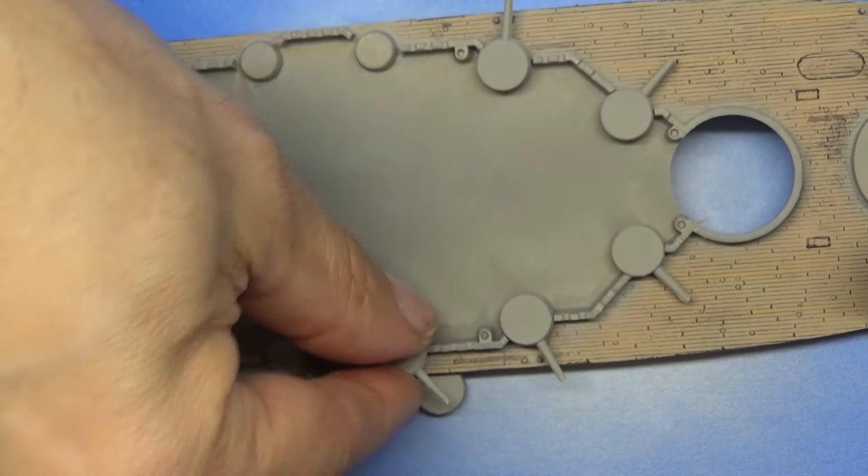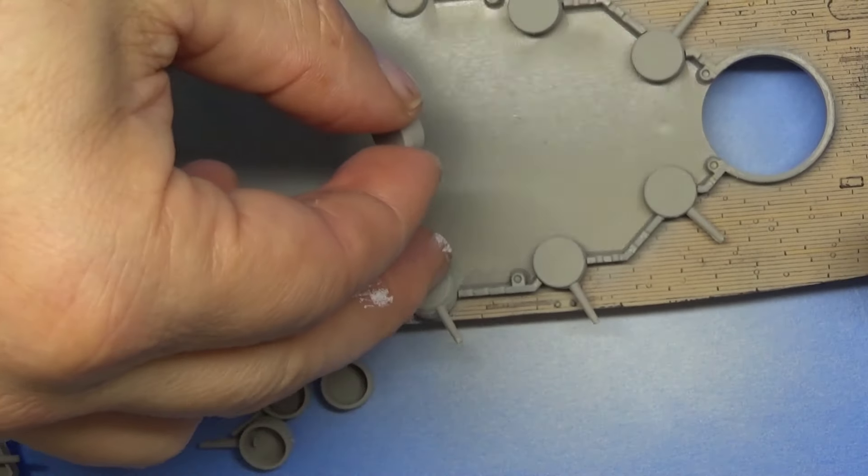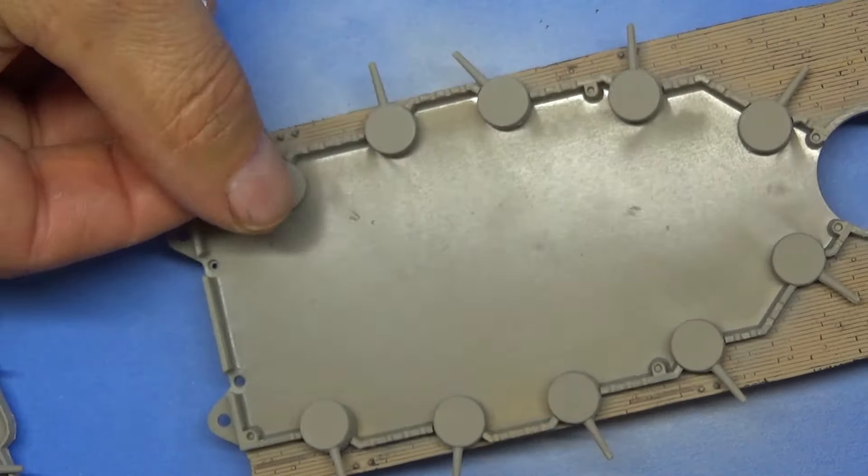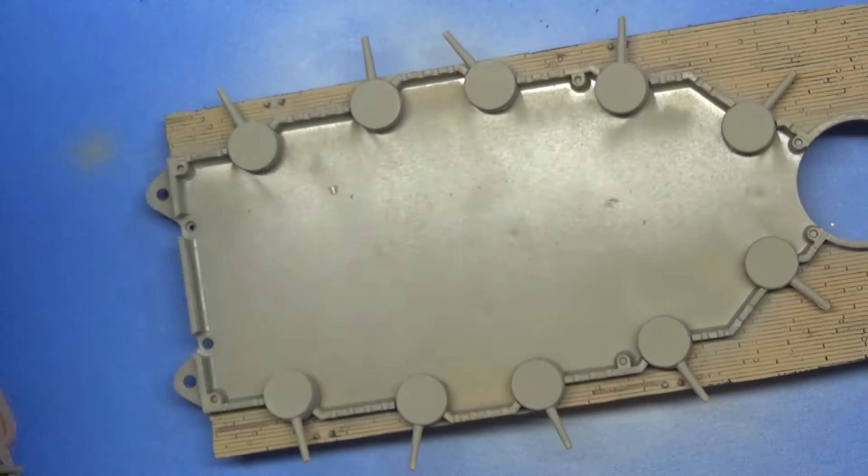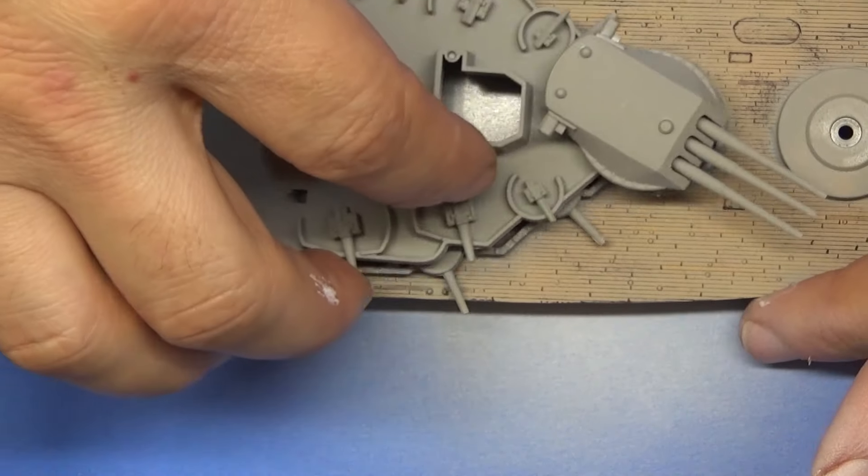So we're adding on the gun turrets right here. Just place these down in there. You can rotate freely. Some are a little tight. Some are not as tight.